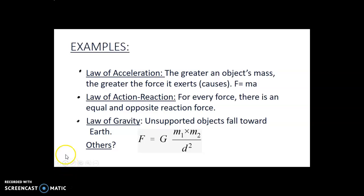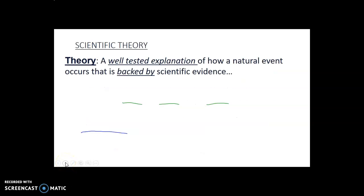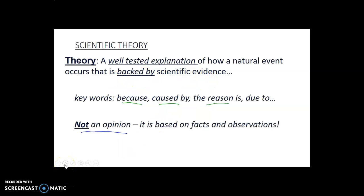There are many other laws, but we won't go through all of them — feel free to jot down others you know. Scientific theories, on the other hand, are well-tested explanations of how a natural event occurs, backed by scientific evidence. Key words that tip you off that you're talking about a theory are: 'because,' 'caused by,' 'the reason is,' or 'due to' — so a theory is attempting to explain why a natural event is happening.